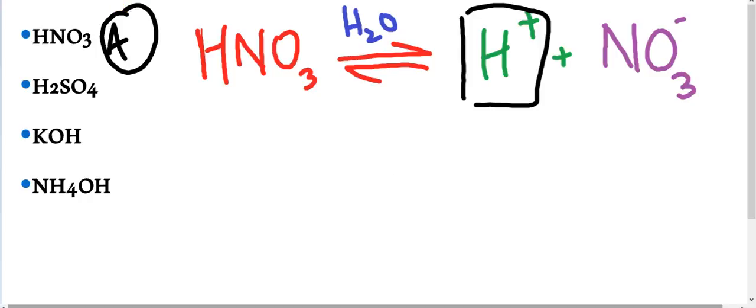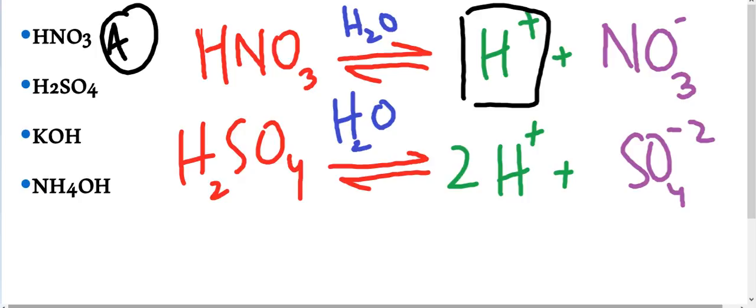Now, let us write the equation for Sulfuric Acid. Here we have two protons or hydrogen ions and one sulfate ion. So, due to the production of hydrogen ions, H2SO4 is acid.